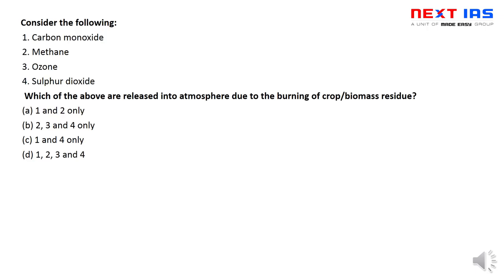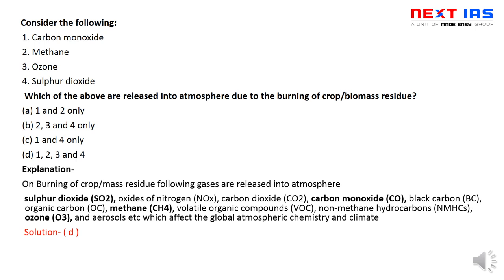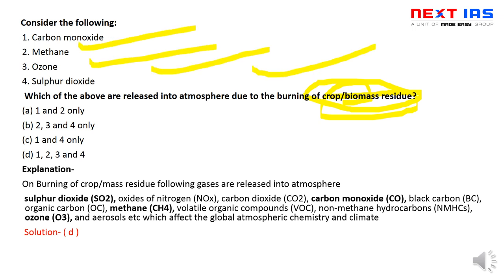अगले question में crop residue burning की समस्या है — जब crop residue जलाते हैं तो कौन-कौन सी gases ज़्यादा release होती हैं: carbon monoxide — बिल्कुल सही, methane — सही, ozone — काफी कम मात्रा में होती है, sulfur dioxide — होती है। आपको crop residue management के initiatives भी पता होने चाहिए — recent budget proposals, collaborative mechanism, और instruments जैसे happy seeder और SMS (straw management system)।